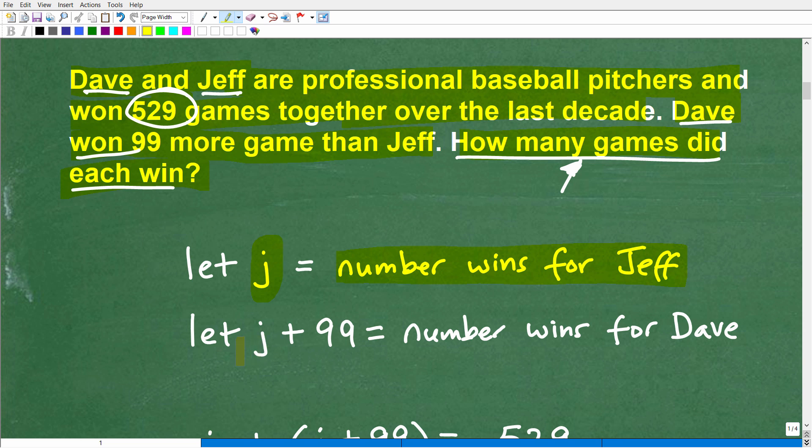So who won more games? Dave won more games. Jeff won less games. So I'm going to let J equal the number of wins for Jeff. And how many games did Dave win? Well, whatever amount of games that Jeff won, he won 99 more. So Dave right here won 99 more games than Jeff. So I'm going to let J plus 99. So this is Jeff's wins plus 99. That's going to be equivalent to the number of wins for Dave. So I'm letting J plus 99 equals the number of wins for Dave. So I have two expressions here. J alone is the number of wins for Jeff. And then J plus 99, I can actually put this in parentheses if I like, that expression there represents the number of wins for Dave.